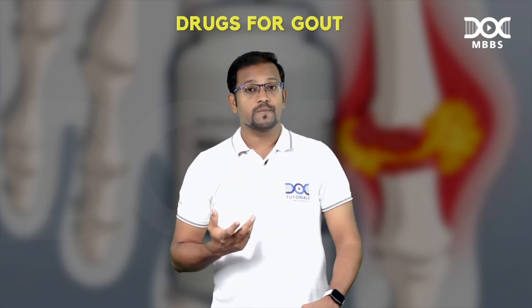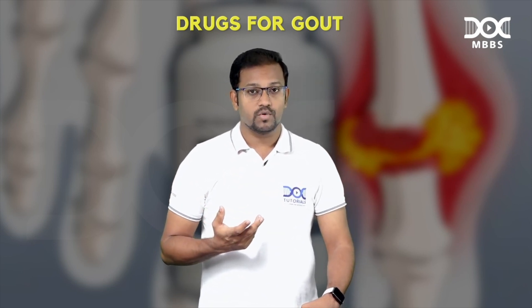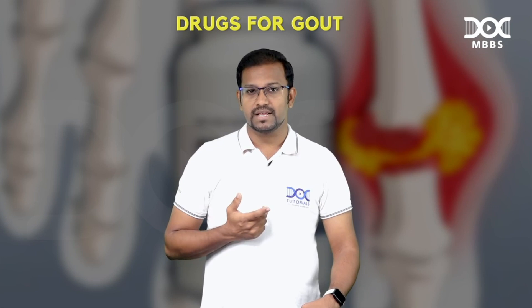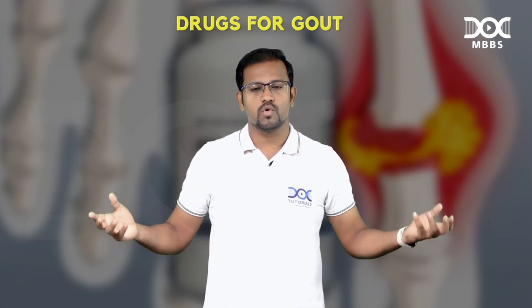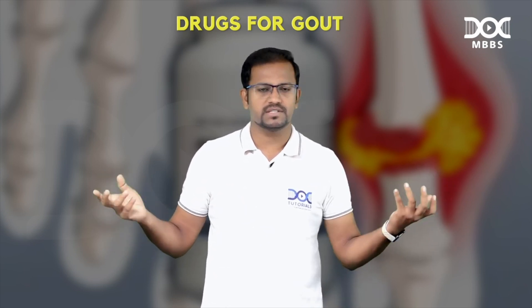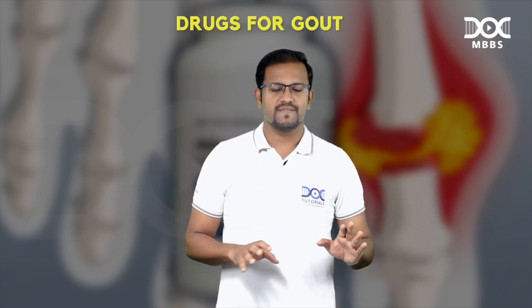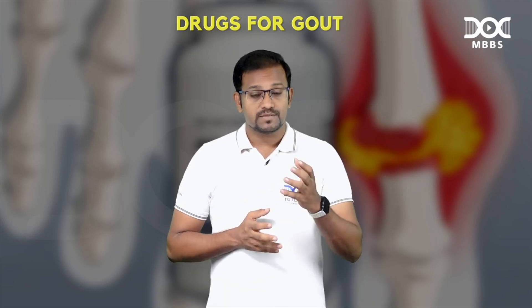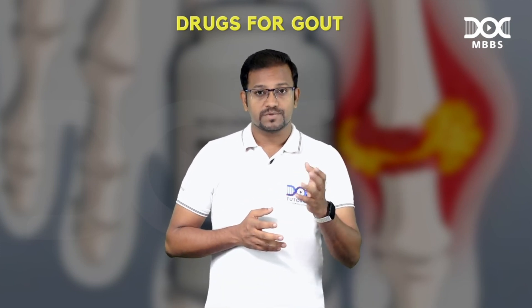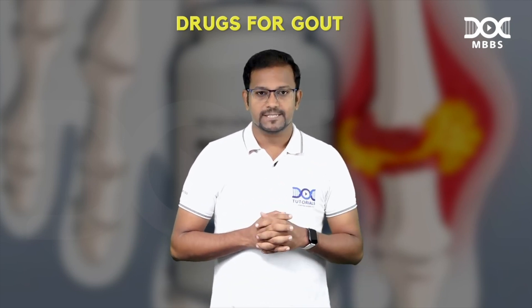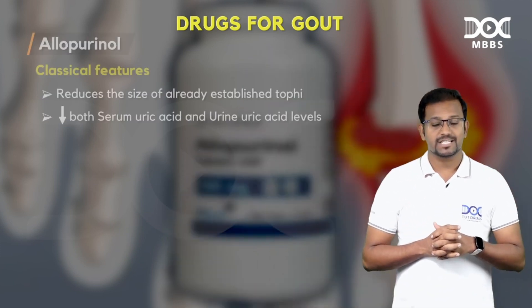We can also strike off colchicine. Colchicine has no role in decreasing or increasing uric acid — it is purely an anti-inflammatory agent. So we can easily strike it off. Let's move towards the next two options after we explain the uricosuric agents.